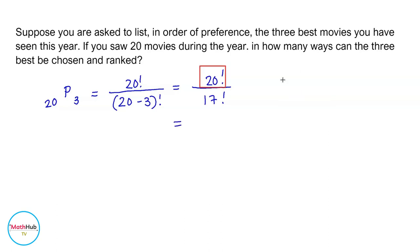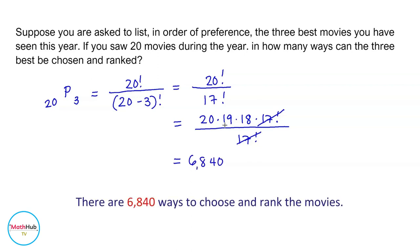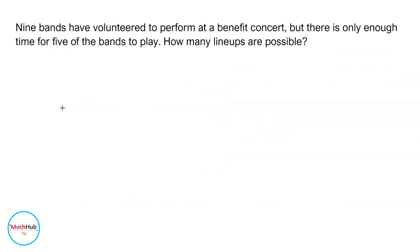We rewrite 20 factorial as 20 times 19 times 18 times 17 factorial, and copy 17 factorial in the denominator. We can then cancel 17 factorial, which gives us 20 times 19 times 18. Multiplying this gives us 6,840, so therefore there are 6,840 ways to do this. Nine bands have volunteered to perform at a benefit concert.